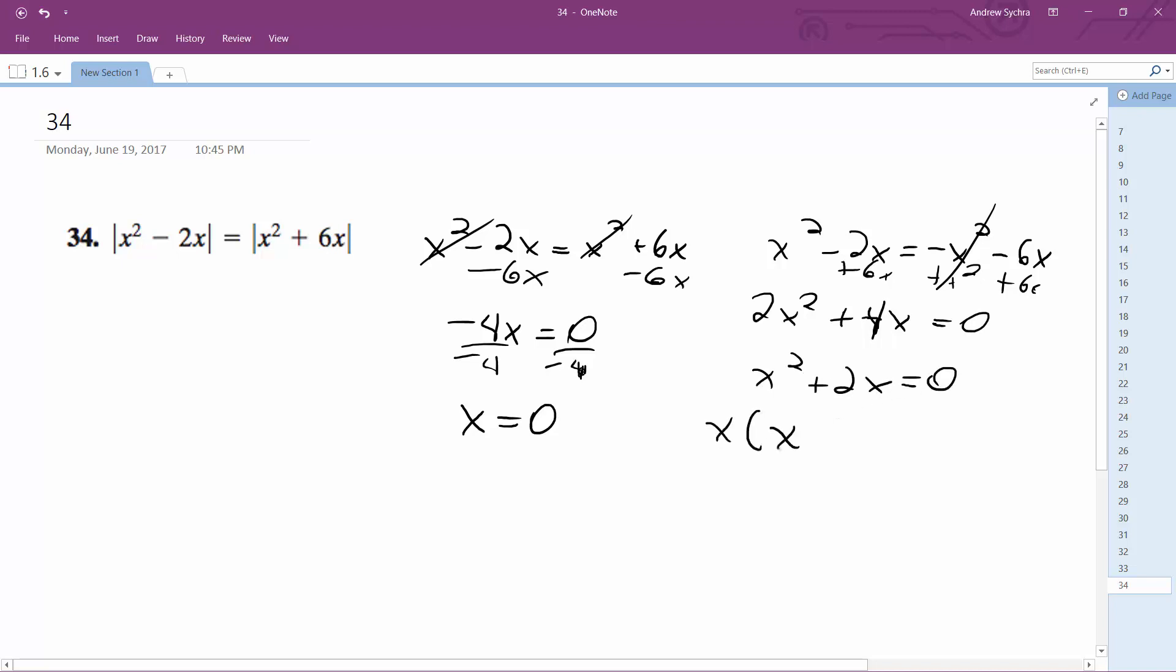And then factor out an x squared, we get x times x plus 2 equals 0, so then we get x equals 0 and negative 2 here.